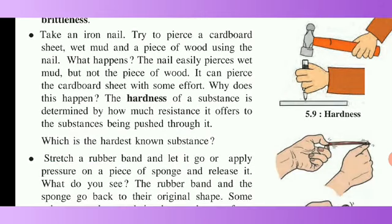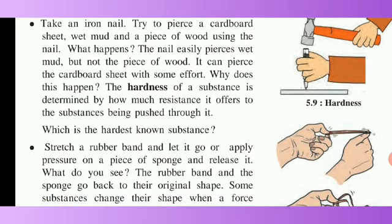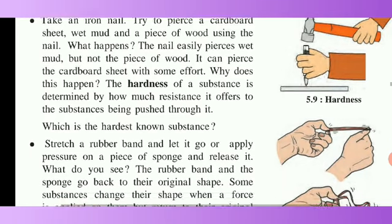Take an iron nail and try to prickle a cardboard sheet, wet mud, and a piece of wood using the nail. The nail easily prickles wet mud but not a piece of wood. It can prickle the cardboard sheet with some effort. The hardness of a substance is determined by how much resistance is offered to the substance being pushed through it.